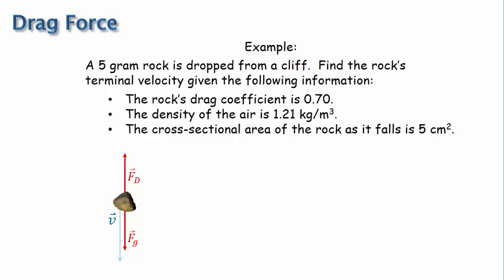At this point, the net force is zero, so the rock stops accelerating and the velocity remains constant. The velocity at this point has reached a maximum value for the falling rock, and this maximum velocity is called the terminal velocity.